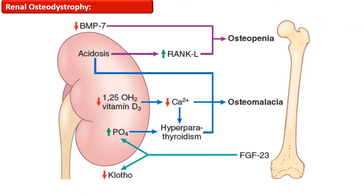Tubular dysfunction results in renal tubular acidosis, and systemic acidosis leads to dissolution of hydroxyapatite. Finally, matrix demineralization occurs, resulting in osteomalacia.